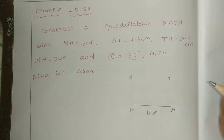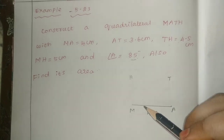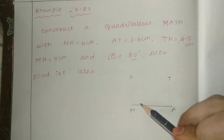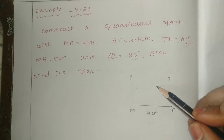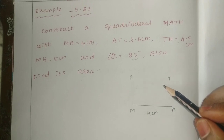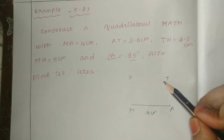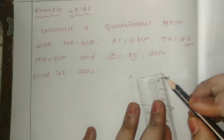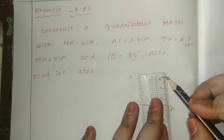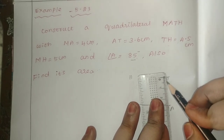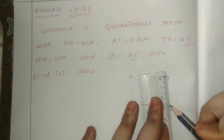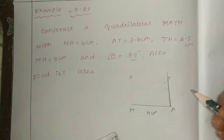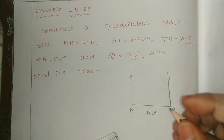Here we use the protractor. 85 degrees — inside, outside: 0, 10, 20, 30, 40, 50, 60, 70, 80 — and between 80 and 90 the middle is 85. So we mark the 85 degree angle at A. This is shown in the rough diagram.